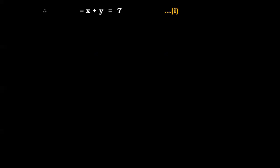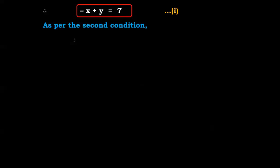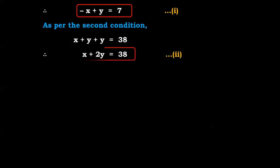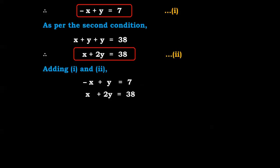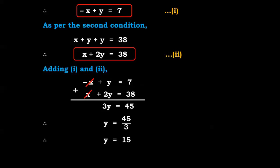As per the first condition, AP exceeds AB by 7: y = x + 7, so -x + y = 7, equation 1. As per the second condition, perimeter = 38: x + y + y = 38, so x + 2y = 38, equation 2. Adding equations 1 and 2: -x + y + x + 2y = 7 + 38, giving 3y = 45, therefore y = 15.